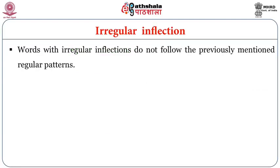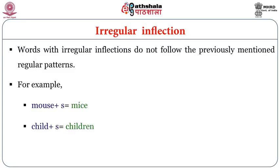Words with irregular inflections do not follow the previously mentioned regular patterns. For example, 'mouse' becomes 'mice', and 'child' becomes 'children'. We cannot simply add S or ED to change the word — the word is altogether changed. This is known as irregular inflection.